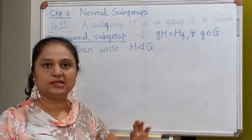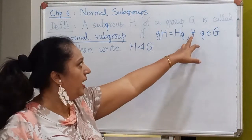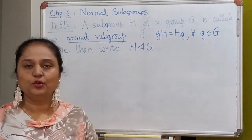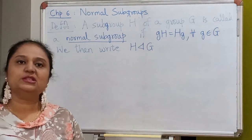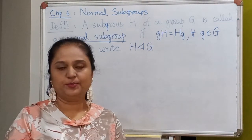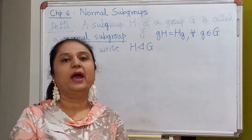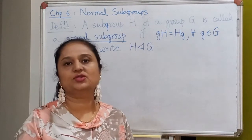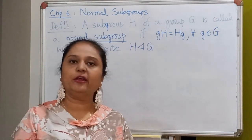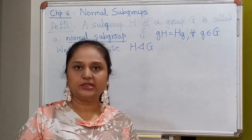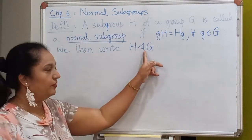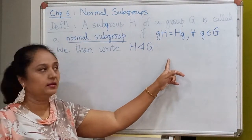gH must be the same as Hg, and this should be true for all elements of the group. So a normal subgroup is a special kind of subgroup — it has to be a subgroup and then satisfy this extra condition. If H is a normal subgroup of G, we write it symbolically in this way.